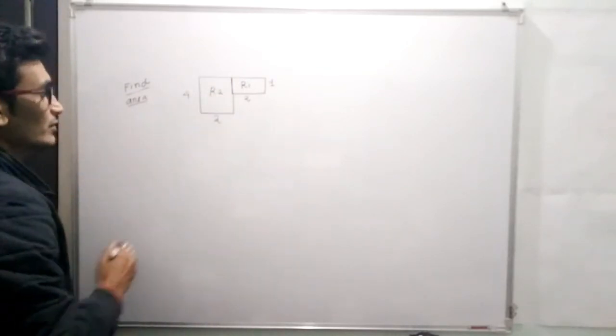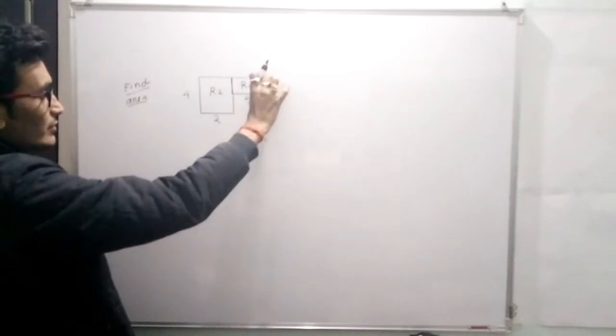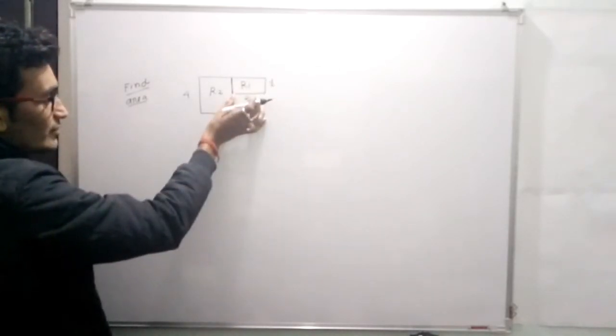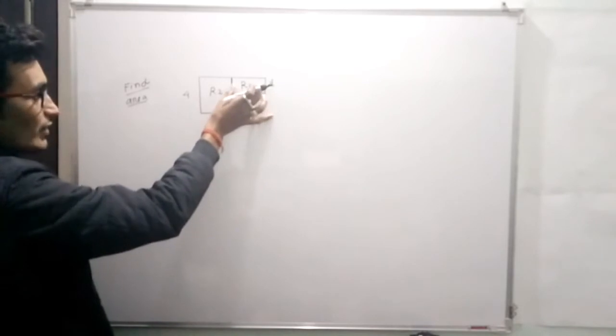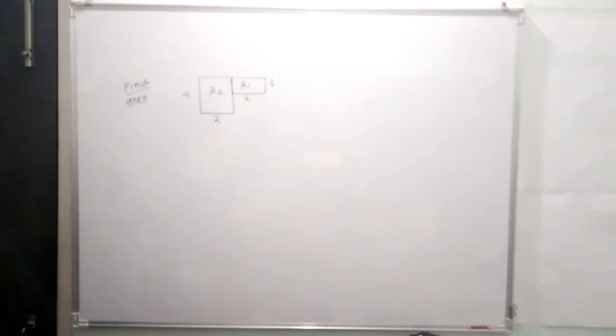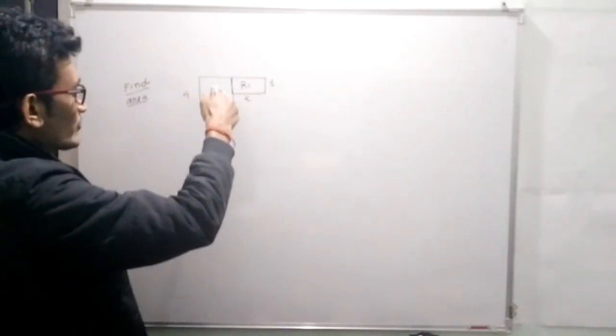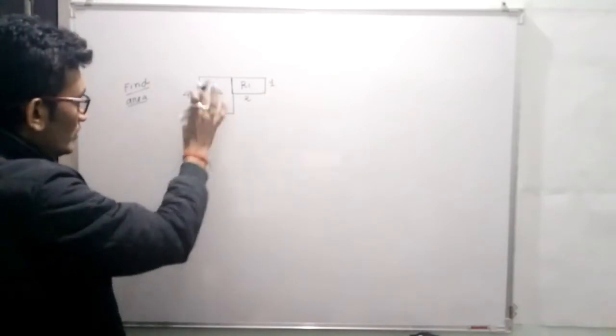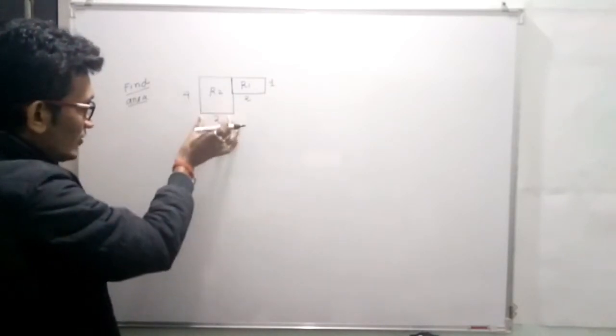Now for this rectangle, this is the breadth and this is the length, so we can easily find out the area of rectangle R1. Similarly, for rectangle R2, this is the length and this will be the breadth.